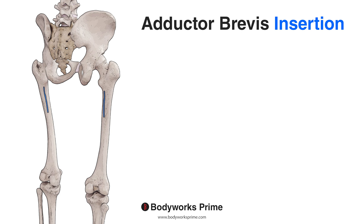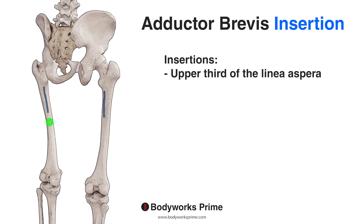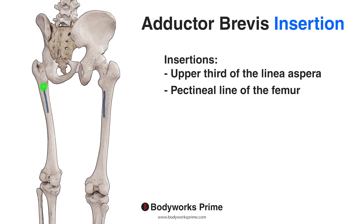Moving on to the insertion point next — you can see that highlighted in blue. There's a ridge which runs up the back of the femur called the linea aspera. As the linea aspera reaches a certain point, it branches off onto another ridge called the pectineal line. So the top portion of the insertion is on the pectineal line, which starts here and continues up towards the lesser trochanter of the femur. In summary, the insertion covers the pectineal line and the linea aspera.